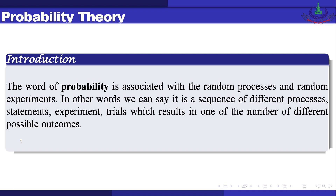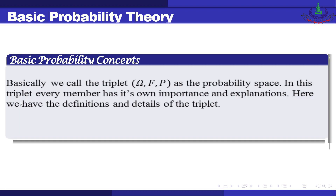The world of probability is associated with random processes and random experiments. In other words, it is a sequence of different processes, statements, experiments, and trials which result in one of a number of different possible outcomes. We call the triplet omega, F, P as the probability space, and in this triplet every member has its own importance and explanation.